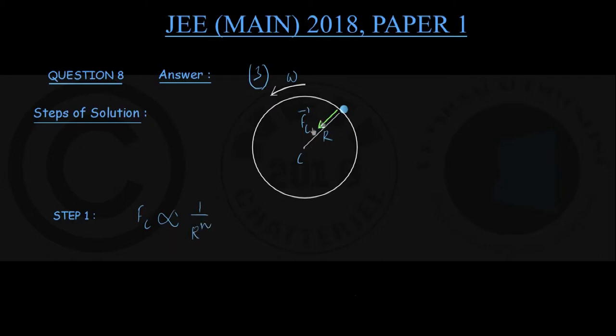Once again, Fc is central force, radius is r followed by this particle under this force with a constant angular speed of omega. So you can write from here that Fc is equal to a proportionality constant divided by r to the power n. That is my equation number 1.